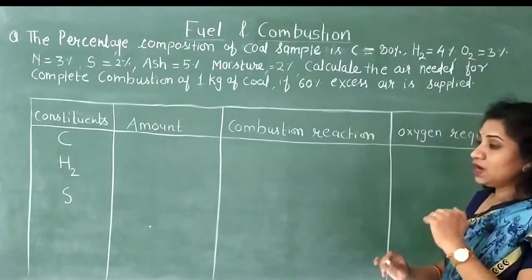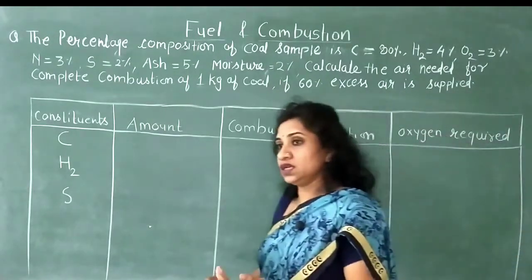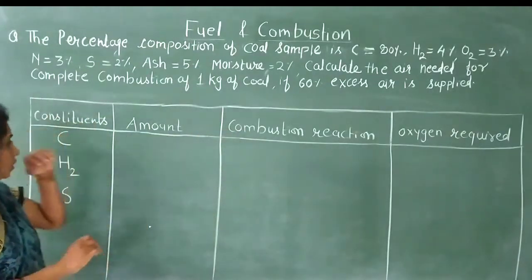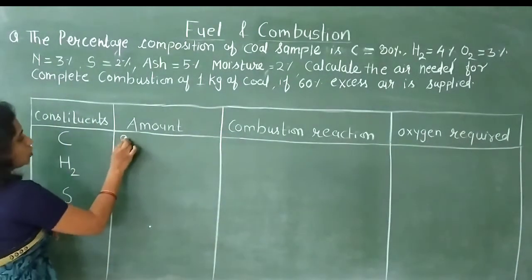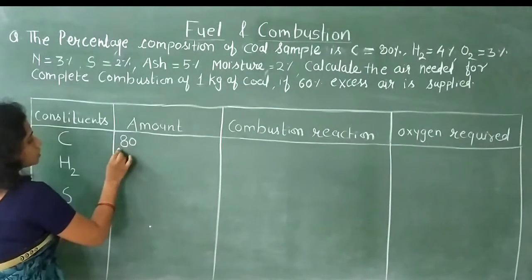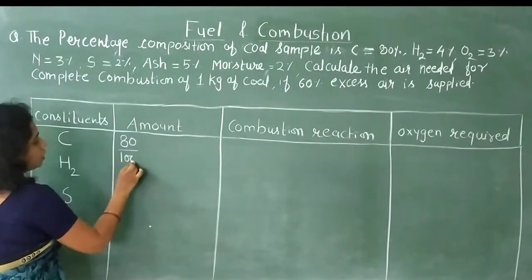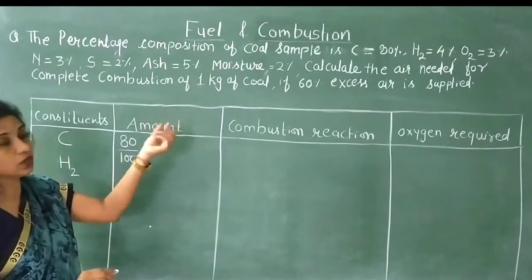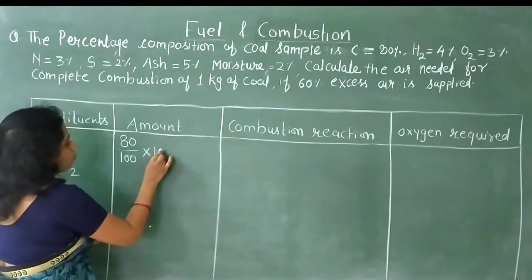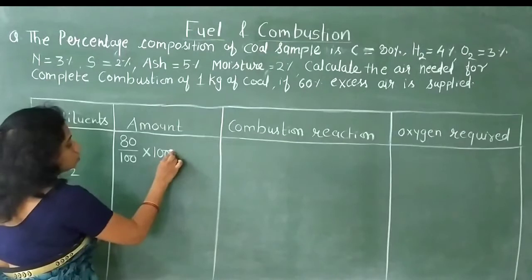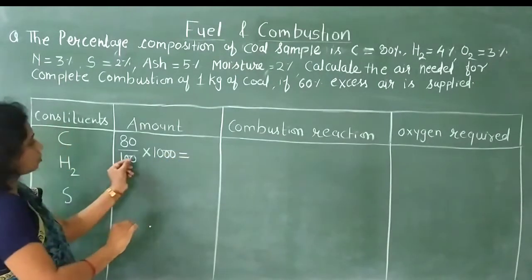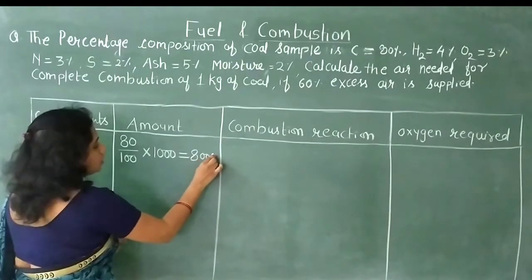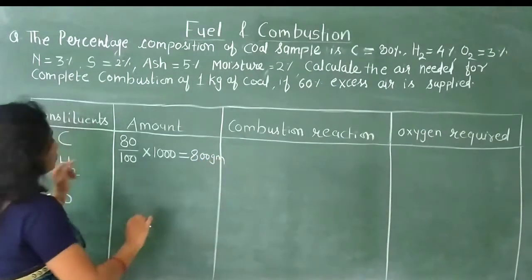Now we calculate the percentage amounts. Carbon's percentage is given as 80%, so: (80/100) × 1000 g = 800 g. The total coal amount is 1 kg = 1000 g. So the amount of carbon is 800 g.